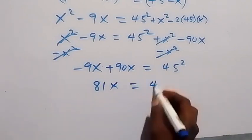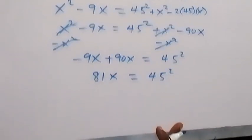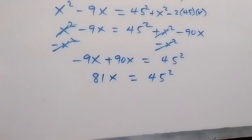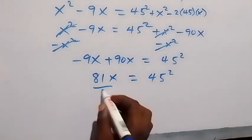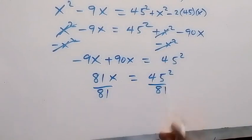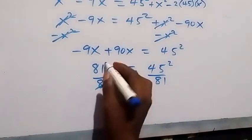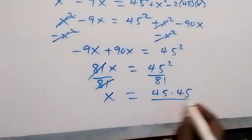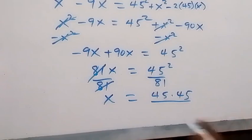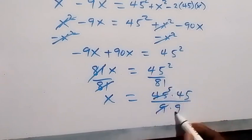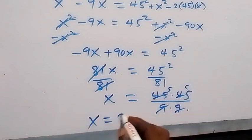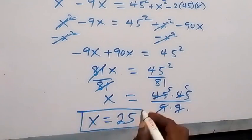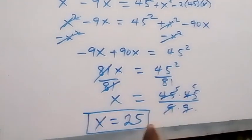We divide both sides by 81. 81 cancels out, giving x equals 45 squared divided by 81. Writing this as 45 times 45 over 9 times 9, each 9 cancels, leaving 5 times 5. Therefore x equals 25.